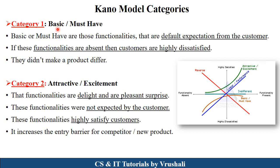Let's understand the first category: basic and must-have. Basic and must-have functionality means this is the default expectation from the customer. For example, WhatsApp and Instagram — both applications have a chatting functionality, so this is a must-have functionality. Now, see here in the diagram: if this functionality is not present in the application, the customer is highly dissatisfied. If functionality is absent, customers are highly dissatisfied.